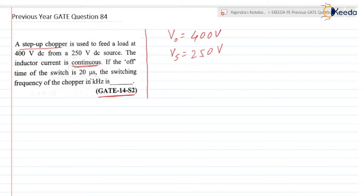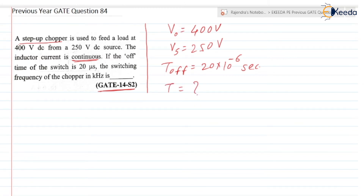If the off time of the switch is 20 microseconds, so Toff is equal to 20 × 10⁻⁶ seconds. The switching frequency of the chopper in kilohertz is what they have asked, so we need to find F in kilohertz.